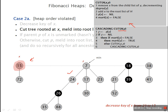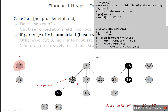After the cut, we call the cascade cut procedure on the parent, which is 24. We update pointer Z, which is pointing to 7. If Z is not equal to nil, we check the mark of Y. The mark of Y is false, so we mark node 24 as true and exit. In this case, we just cut the child node, add it to the root list, and mark it if its mark was previously false.